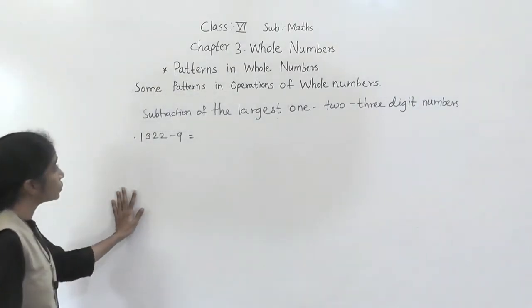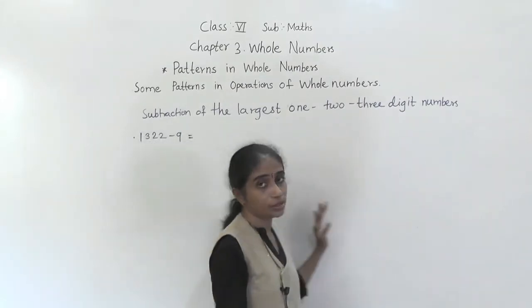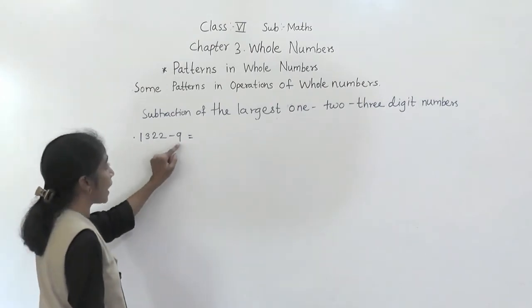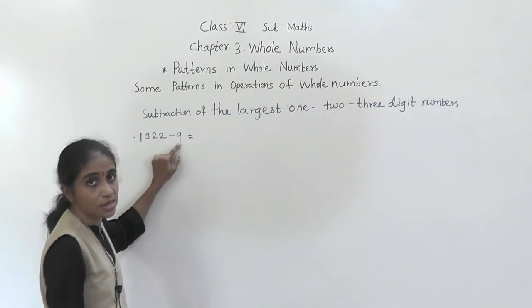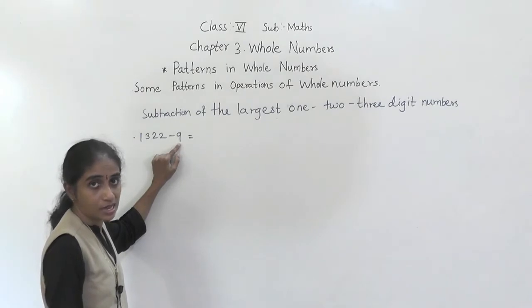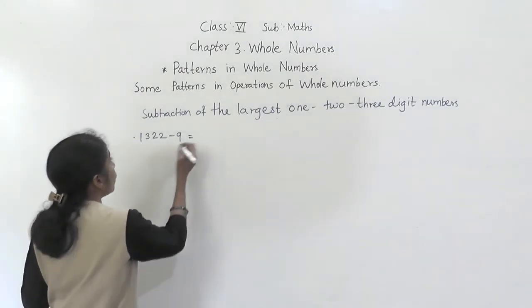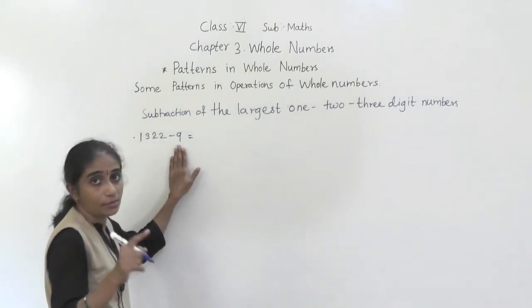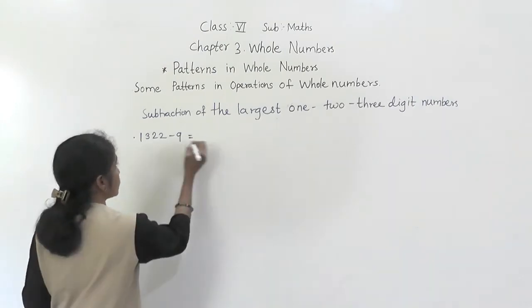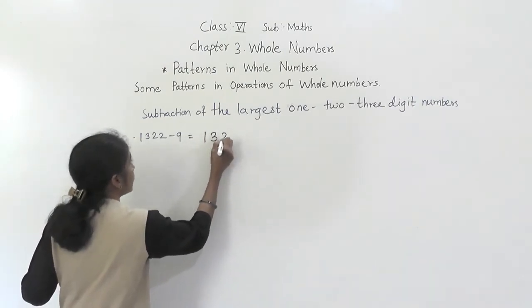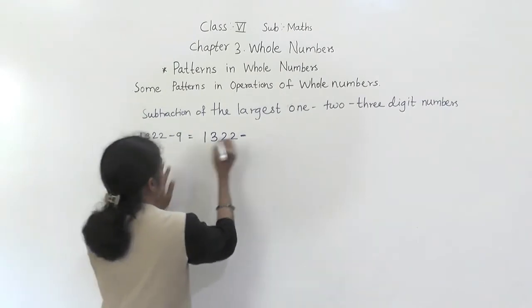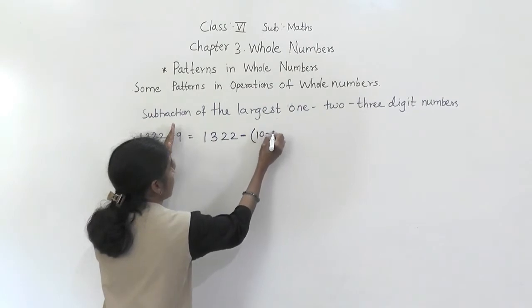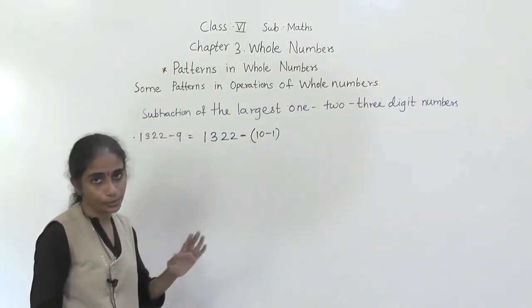Now let's learn subtraction of the largest 1, 2, and 3-digit numbers. The largest 1-digit number is 9. Since 9 = 10 − 1, for 1322 − 9 we write 1322 − (10 − 1). We need to apply rules of integers here — you will learn all the integer rules in the next lesson.